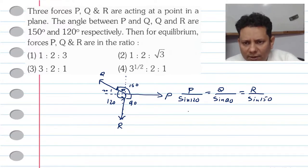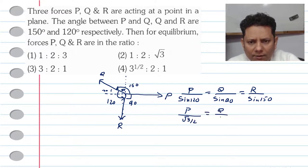So value of sine 120 is root 3 by 2. Q divided by 1, sine of 90 is 1. R divided by sine of 150, so value is 1 by 2.